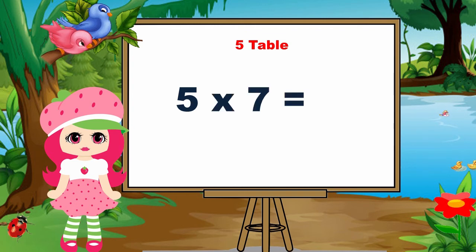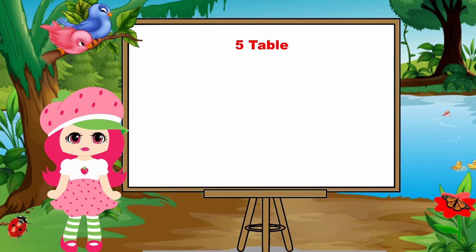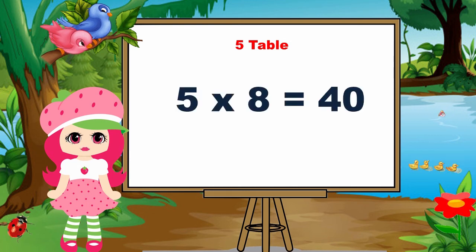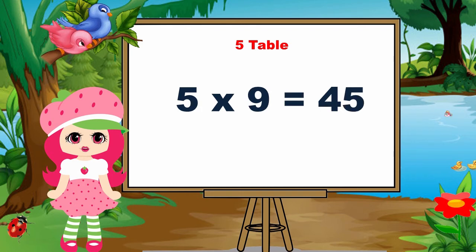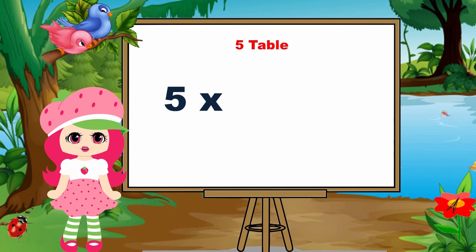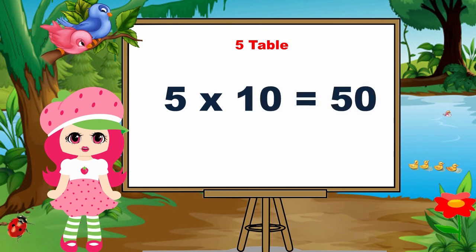Five sevens are thirty-five. Five eights are forty. Five nines are forty-five. Five tens are fifty.